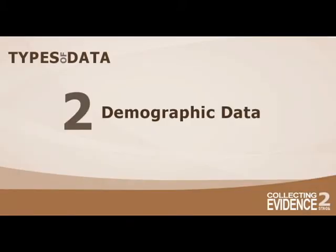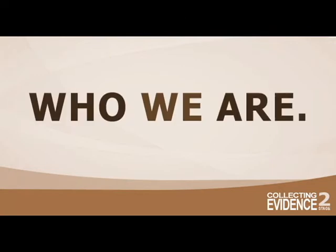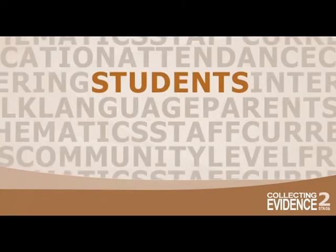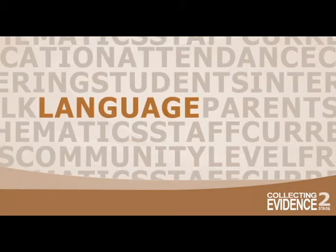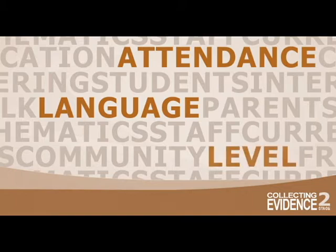The second type of data you can use for school improvement planning is demographic data. Demographic data describes the school context — it tells us who our students, staff, and community are. Examples might include language proficiency, attendance, enrollment, and the number of students currently in the applied versus academic stream. That's important information that might already be gathered for us.